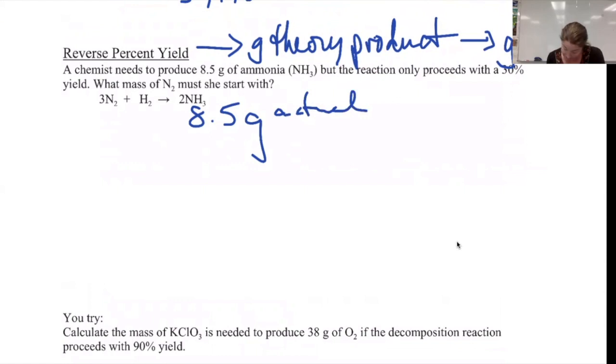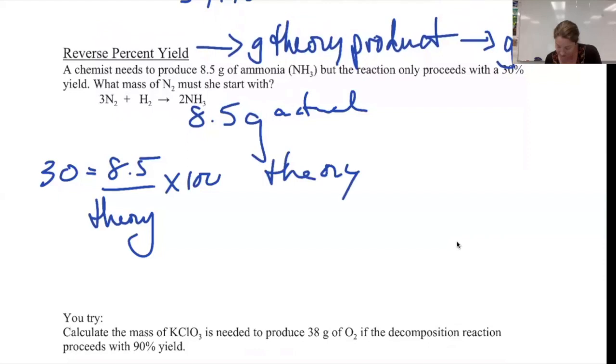So my percent yield equals the actual over the theoretical times 100. I'm going to write theory here instead. So 30 divided by 100 is 0.3, 8.5 divided by 0.3 tells me that my theoretical amount of NH3 is going to be 28.3 grams.